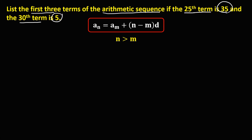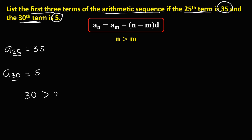From the given, we have the 25th term, so a sub 25 equals 35, and the 38th term, a sub 30 equals 5. Observe that 30 is greater than 25, so therefore 30 is n and 25 is m, meaning a sub 25 is a sub m and a sub 30 is a sub n.